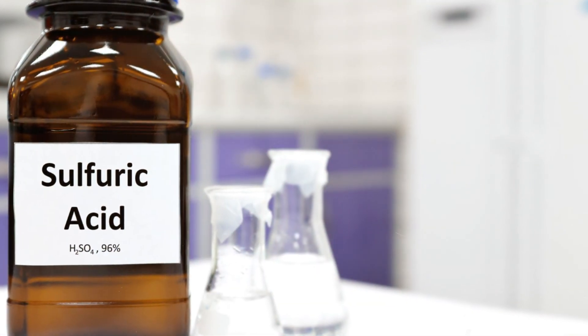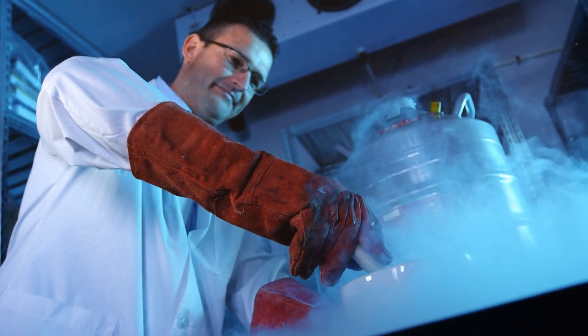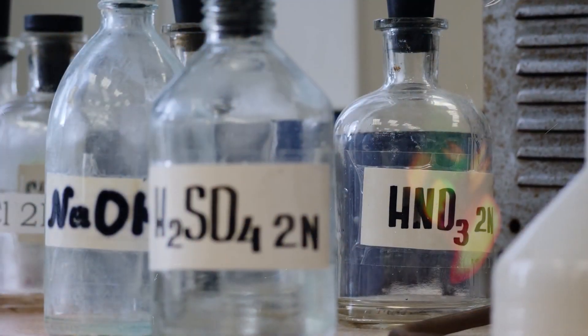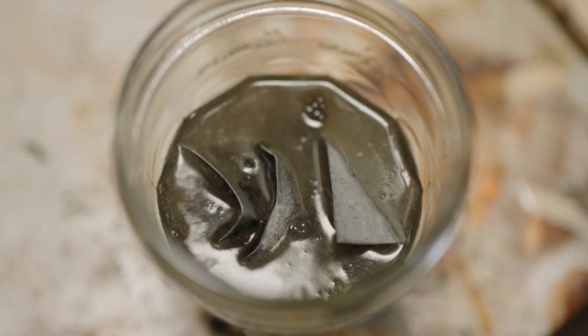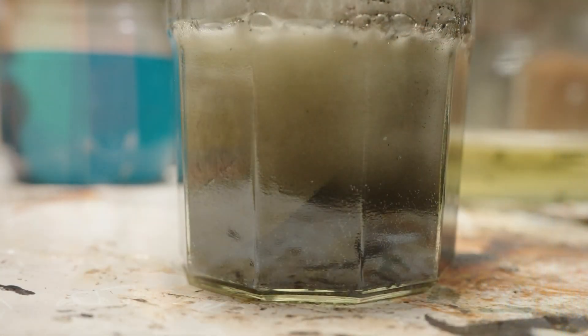Another strong acid known for its corrosive properties is sulfuric acid (H2SO4). It reacts with steel to form iron sulfate and hydrogen gas. The ongoing reaction can compromise the integrity of the steel, leading to potential structural issues.